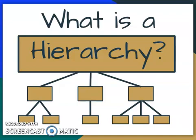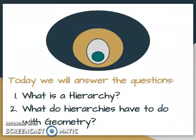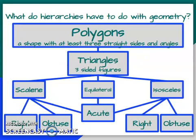We talked about what a hierarchy is — now let's talk about what it has to do with geometry. Take a look at this hierarchy. At the top we have polygons, which are shapes with at least three straight sides and angles. One type of polygon is triangles — three-sided figures — and we have three types: scalene, equilateral, and isosceles. We can classify triangles even further: some can be right triangles, like scalene and isosceles; some can be obtuse triangles, like scalene and isosceles; and some can be acute, which can be scalene, equilateral, or isosceles.